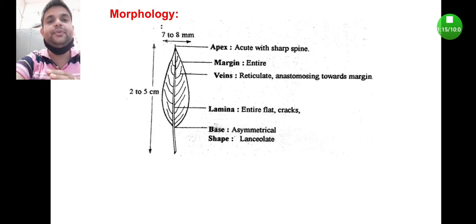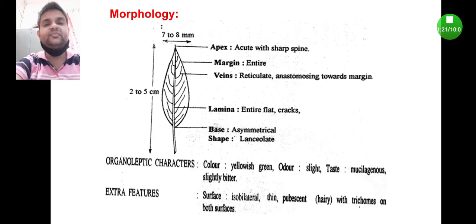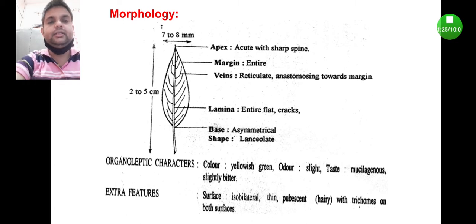This shape is known as lanceolate shape. Coming to its organoleptic character, it is yellowish green in color, odor slight or characteristic, taste is mucilaginous or slightly bitter.